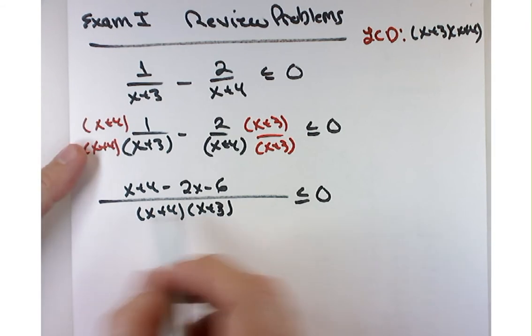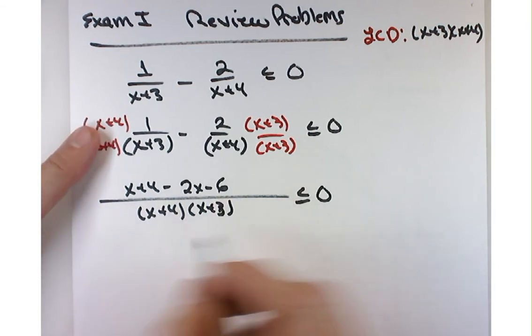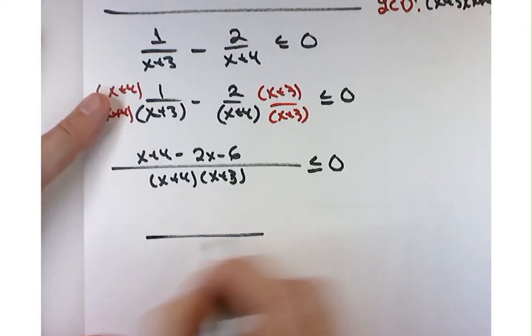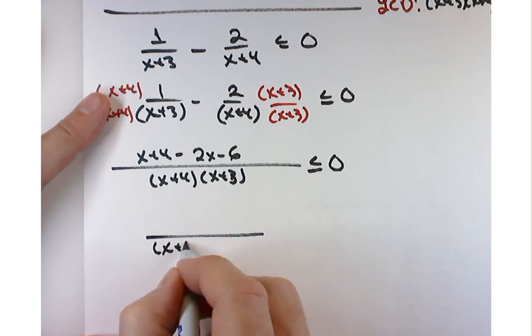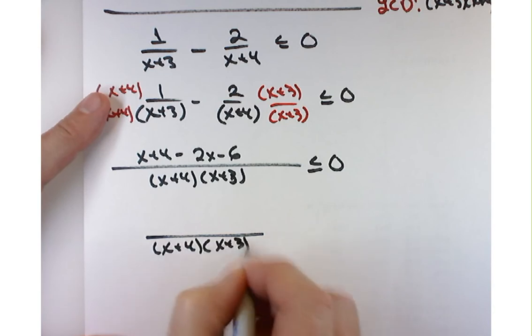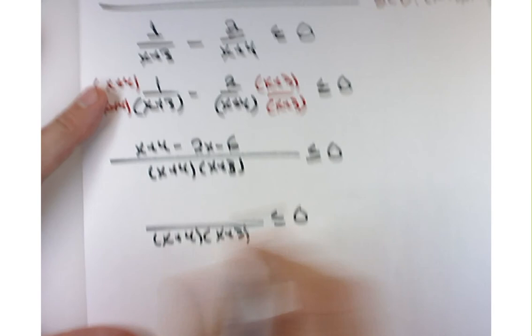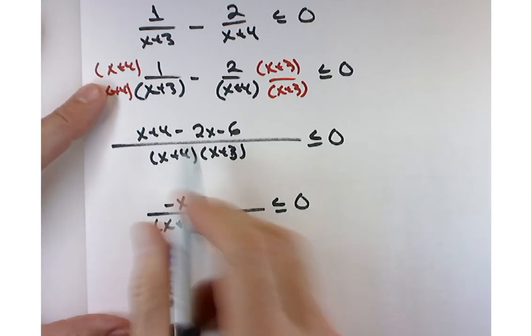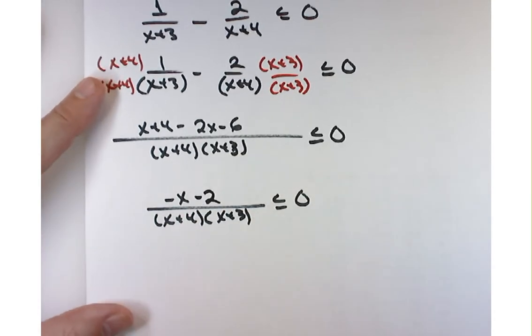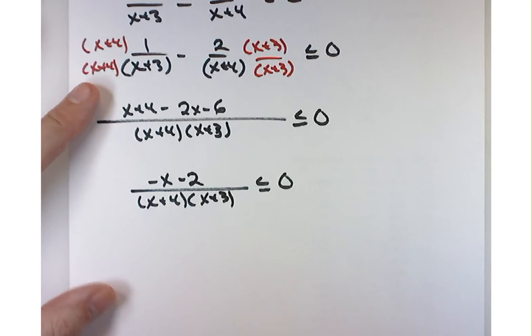In the numerator, let's combine like terms. When I combine like terms in the numerator, what do I get? Negative x minus 2.